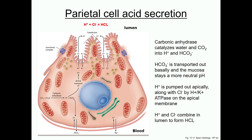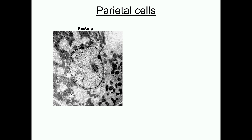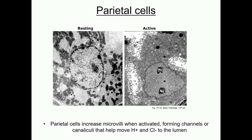These processes require a lot of energy, so the parietal cells have high numbers of mitochondria, which can be seen in this electron micrograph, and which give the cells their deep red color. Another striking feature of these cells in EM are the invaginations of the plasma membrane that form intracellular channels, or canaliculi, and these increase the surface area of the cell and help in the transport of ions. These microvilli, or canaliculi, are a hallmark of an activated parietal cell.